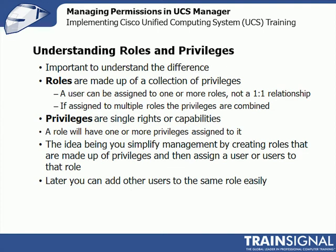It's important to understand the difference between roles and privileges. Roles are made up of a collection of privileges. A user can be assigned to one or more roles — it's not a one-to-one relationship, so a user like Jason can be both a network administrator and a storage administrator. If you assign multiple roles, the privileges are combined. Privileges are a single right or capability — a network admin will have privileges to create VNIC policies, change VNIC policies, create a VLAN, delete a VLAN, and other things that combine to make a network admin role. You simplify management by creating roles made up of the privileges you want, then assigning users to those roles. Later, you can add other users to the same role — if Joe leaves and we hire Susan, we just put her in Joe's role without having to remember which permissions we assigned to Joe.